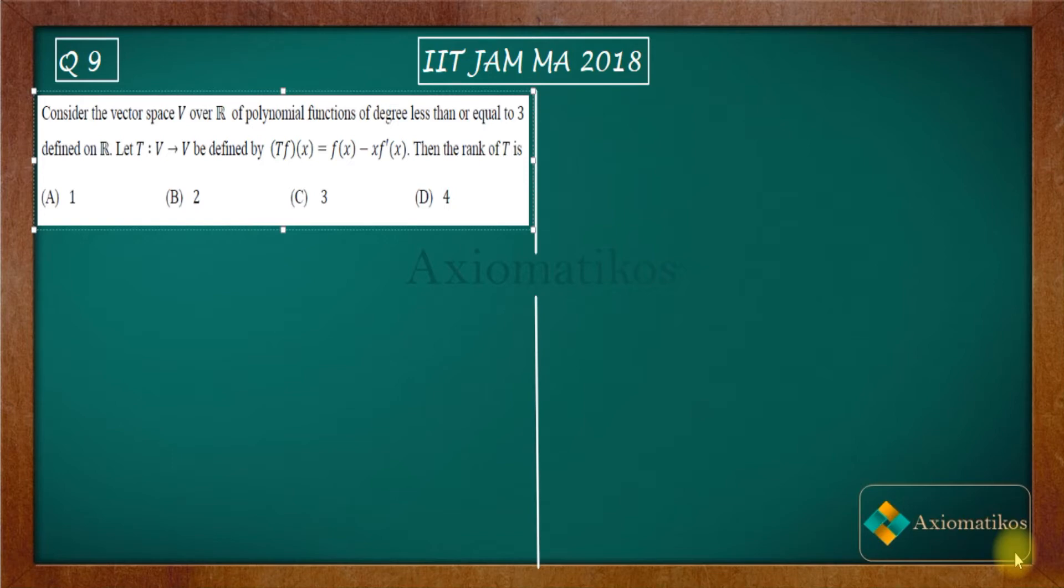Let us firstly have a look. Consider the vector space V over R of polynomial functions of degree less than or equal to 3. So we are given with the vector space which consists of polynomials of degree less than or equal to 3.